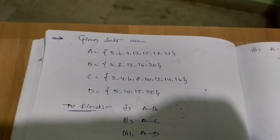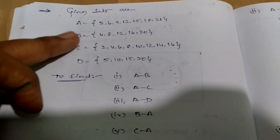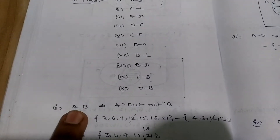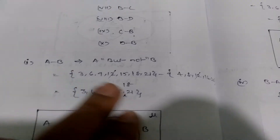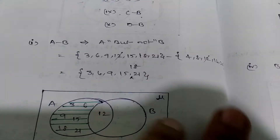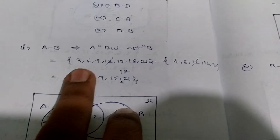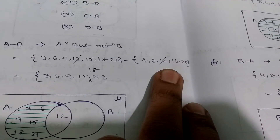First, mention what is given in the question — mention all the sets, what is given, and what to find. Then take down the first question: A minus B. What does A minus B indicate? It indicates A but not B. These steps are compulsory — A but not B — so take down set A, then minus, then set B.